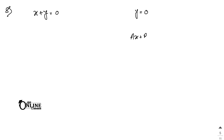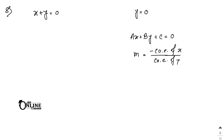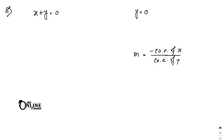In sum number 8, we find the acute angle between the first straight line x plus y equal to 0 and the second line y equal to 0. Recall that for a line ax plus by plus c equal to 0, the slope formula is m equal to minus coefficient of x divided by coefficient of y.